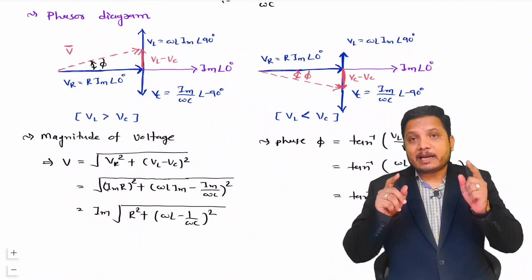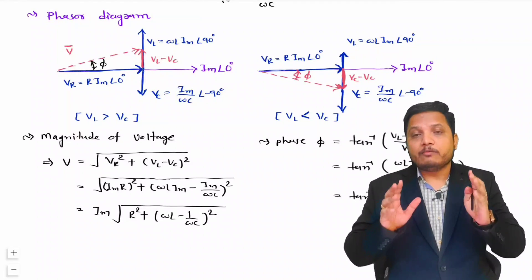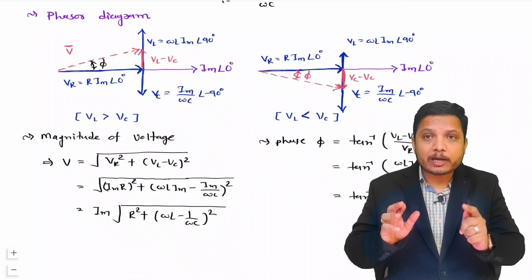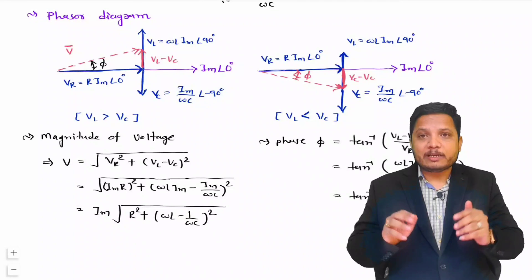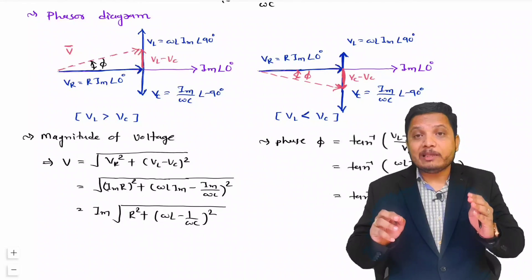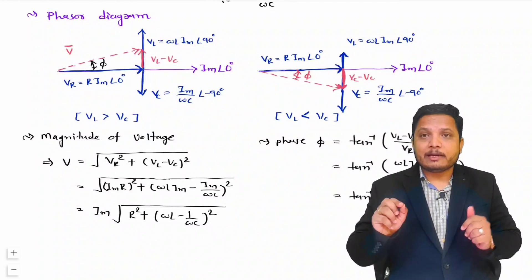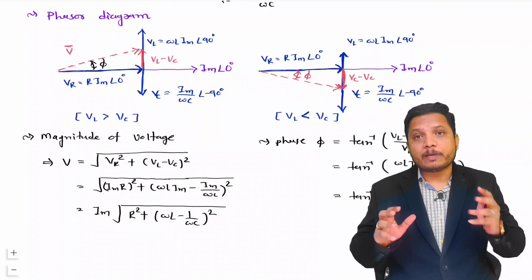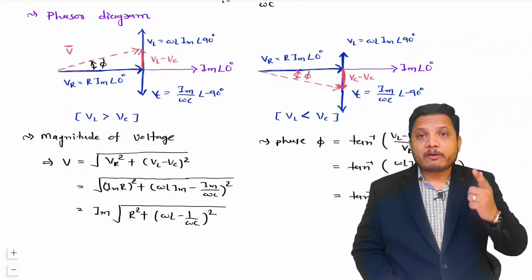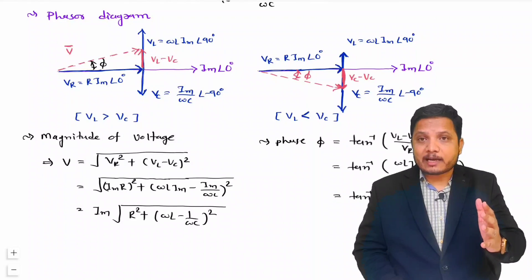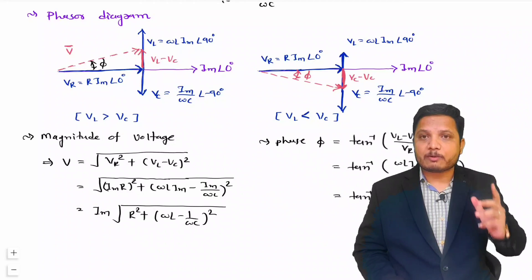These are key points to note: for an inductive network voltage leads with respect to current, and for a capacitive network voltage lags with respect to current. These points come up frequently in competitive examinations, so you should be ready for them. I hope you have understood this. If any query remains, post it in the comment box — I will be happy to help. Thank you so much for watching.